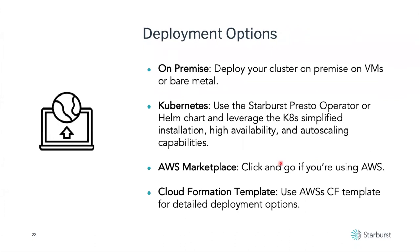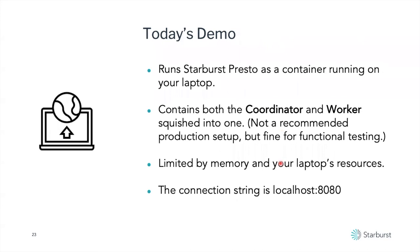There are multiple deployment options. If you wanted to try this on a larger scale, we're going to talk about that next week. For right now, what we're going to be doing is running Starburst Presto as a container running on your laptop. Of course, you're going to watch it happening on mine. It contains both a coordinator and the worker squished into one — you can tell the Presto container that you are both a coordinator and a worker. If you were to look at a picture of it, it would just be one box serving both roles.